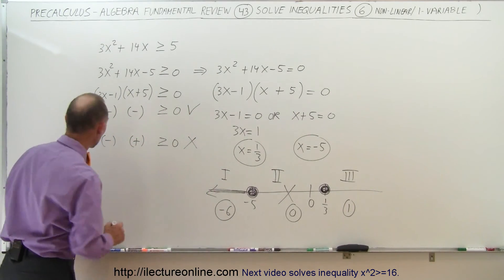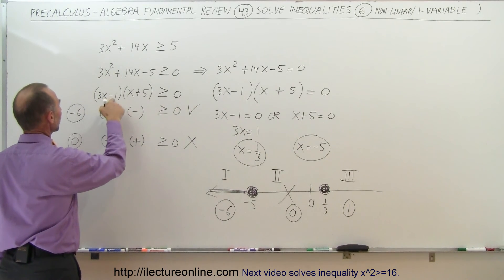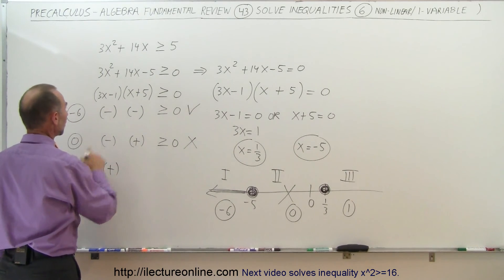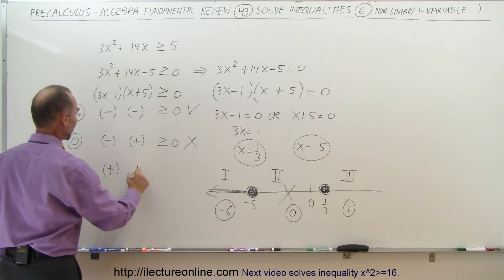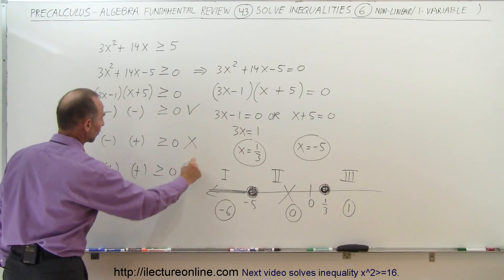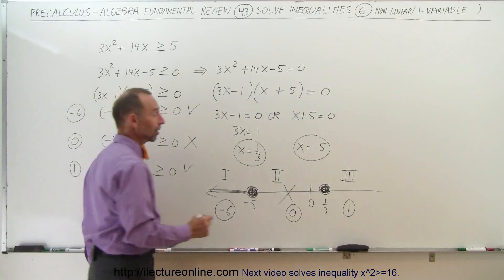Sample point 3 to the right, I'll plug in number 1. If I plug 1 in here, 3 minus 1 is 2, which is a positive quantity. Plug in 1 there, 1 plus 5 is 6, that's a positive quantity. Positive times positive, yes, that will be greater than 0. So therefore, anything to the right of 1 third also satisfies the inequality.